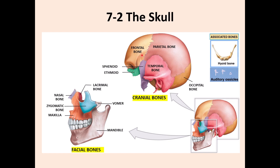The cranial bones: the frontal bone is unpaired. The parietal bone is paired. The occipital bone is unpaired. The temporal bone is paired, one on each side. The ethmoid bone and sphenoid bone are not paired - they are just single bones.